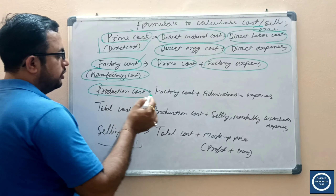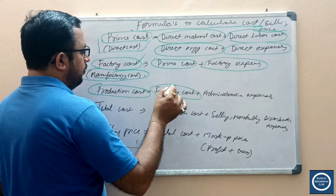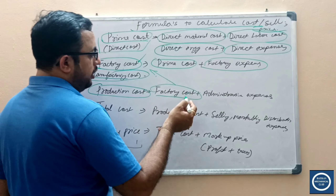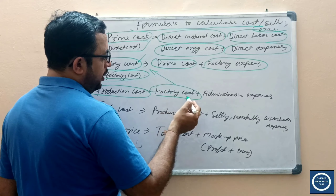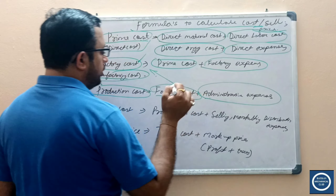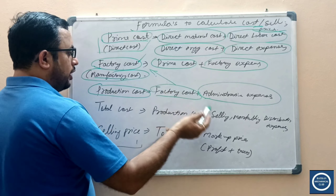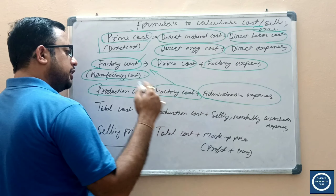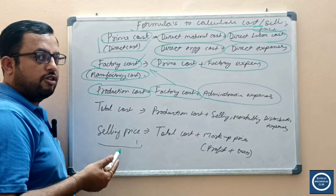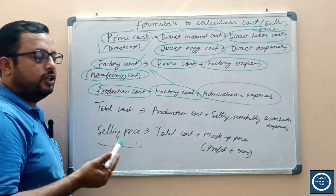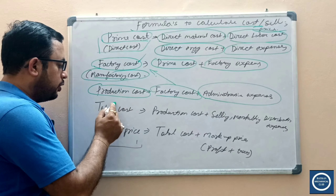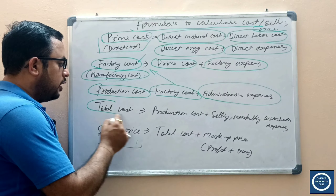Next, we have to calculate the production cost. Production cost is the sum of your factory cost plus administrative expenses. I have made a separate video on administrative expenses — you can go and check from there. This gives us the production cost.